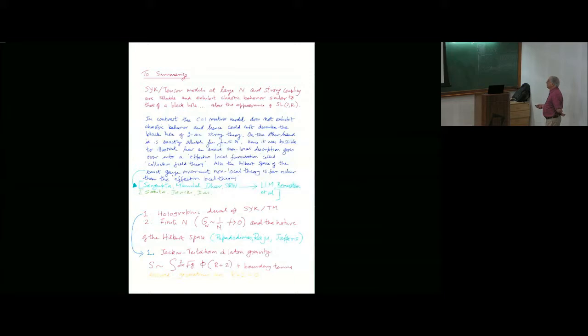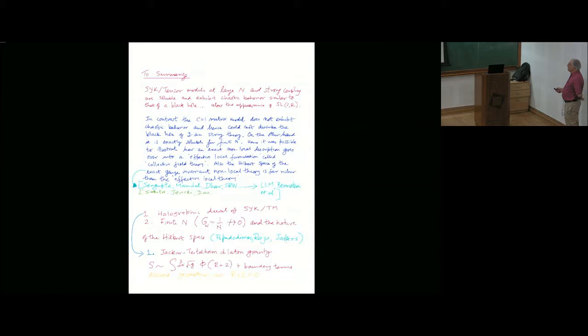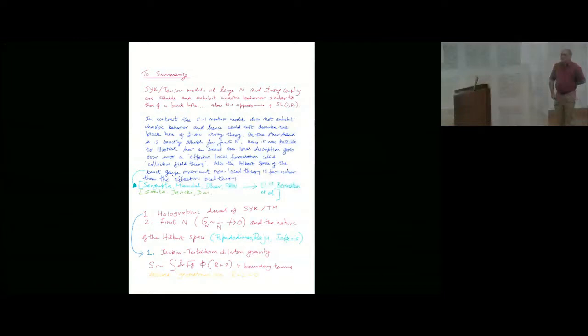It's many years since we had a soluble model, and there was a whole era in the 1990s and around that time in which people focused a lot on the C=1 matrix model with the hope that you can understand black hole physics because the two-dimensional string theory does have a black hole. Now, however, if you do the chaos diagnostics for the C equal to 1 matrix model, it does not exhibit chaotic behavior. In fact, it's an integrable system of free fermions moving in a potential.